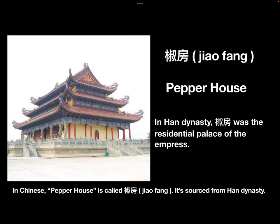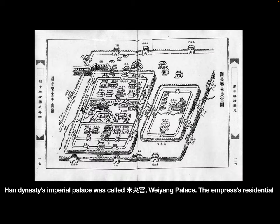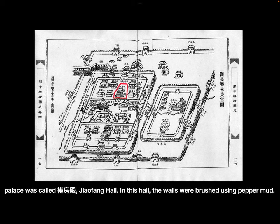In Chinese, paper house is called jiaofang. It's sourced from the Han Dynasty. The Han Dynasty's imperial palace was called the WeiYang Palace. The emperor's residential palace was called the JiaoFangDian.